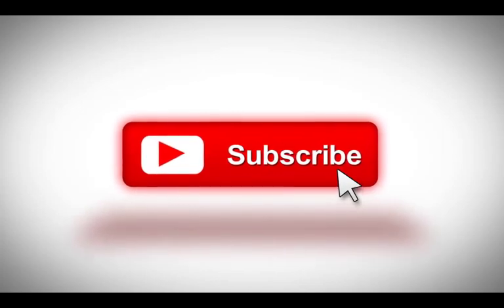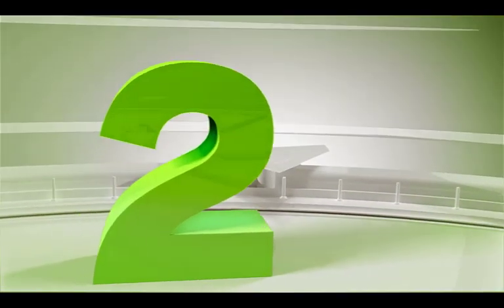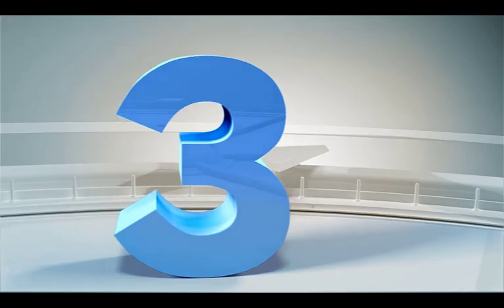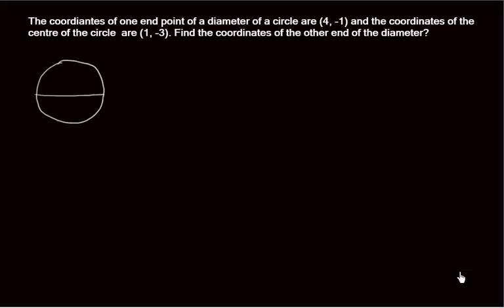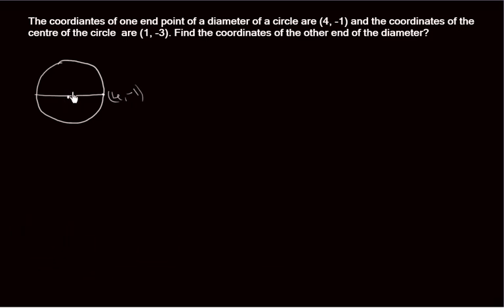Here I have taken a circle with a diameter. Let this point be one end of the diameter: (4, -1). And here this is the center coordinate — the center point of the circle — and this coordinate is (1, -3). We have to find the coordinates of the other end of the diameter.